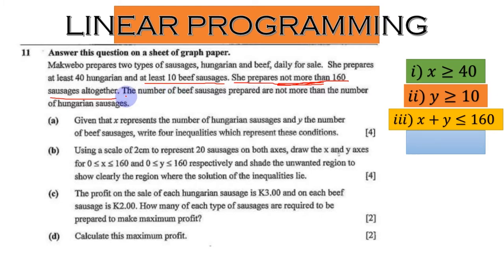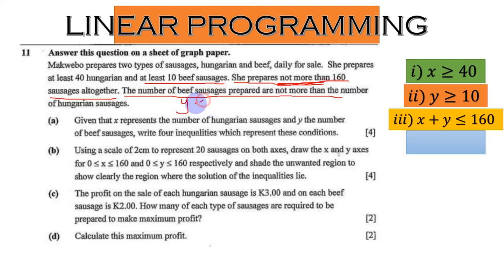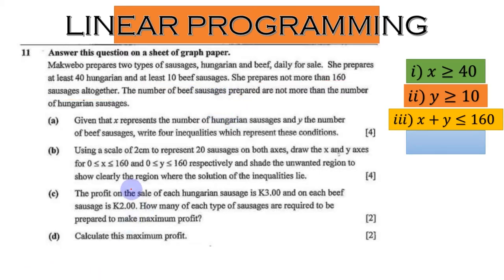The fourth inequality: the number of beef sausages prepared are not more than the number of Hungarian sausages. The first quantity mentioned is beef, represented by y. 'Not more than' means less than or equal to, and Hungarian is represented by x. So the last inequality is y ≤ x.